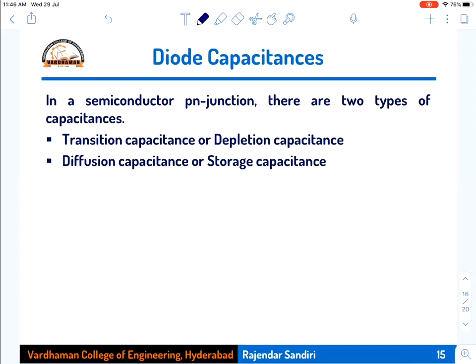The next topic is diode capacitances. Diode resistances are offered in both forward bias and reverse bias. In a semiconductor P-N junction, there are two types of capacitances: transition capacitance (or depletion capacitance) and diffusion capacitance. Transition capacitance acts in the reverse bias region, while diffusion capacitance acts in the forward bias region.